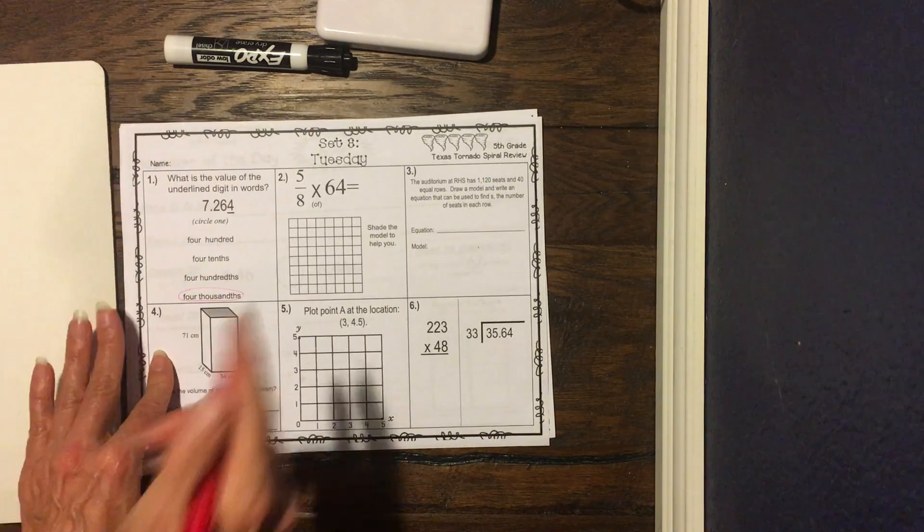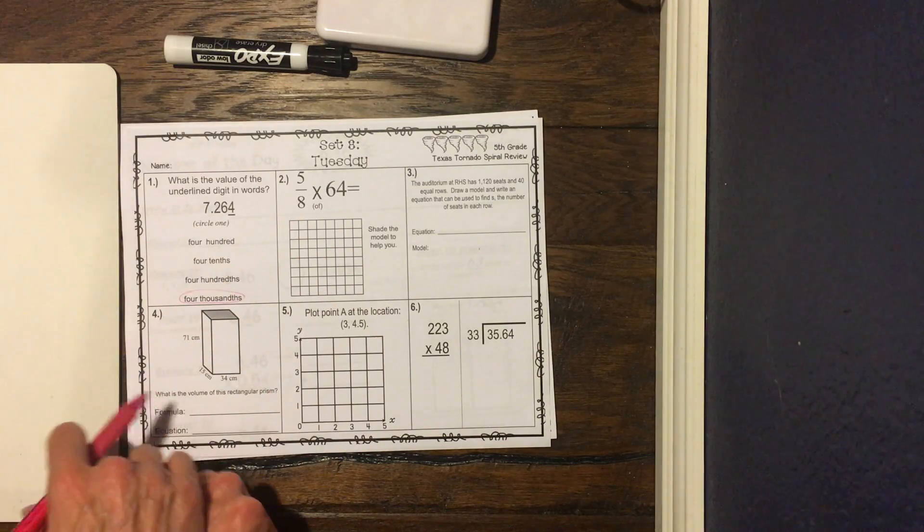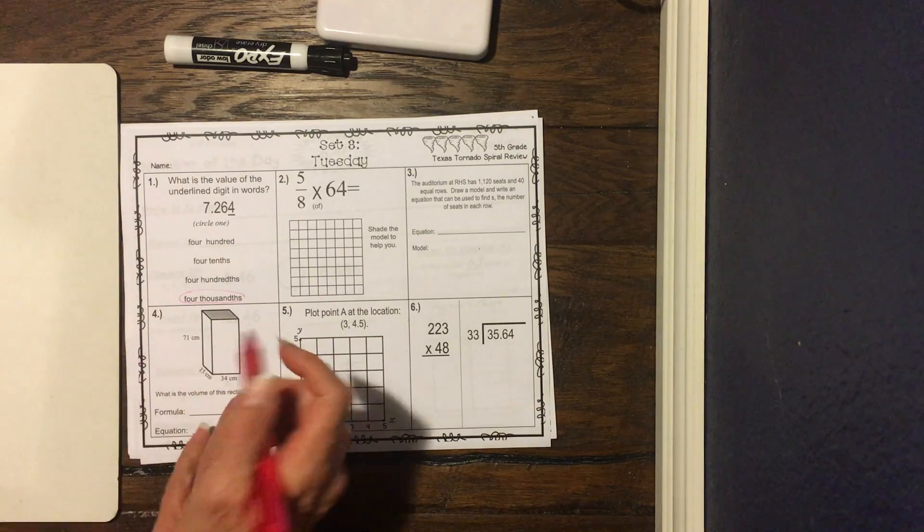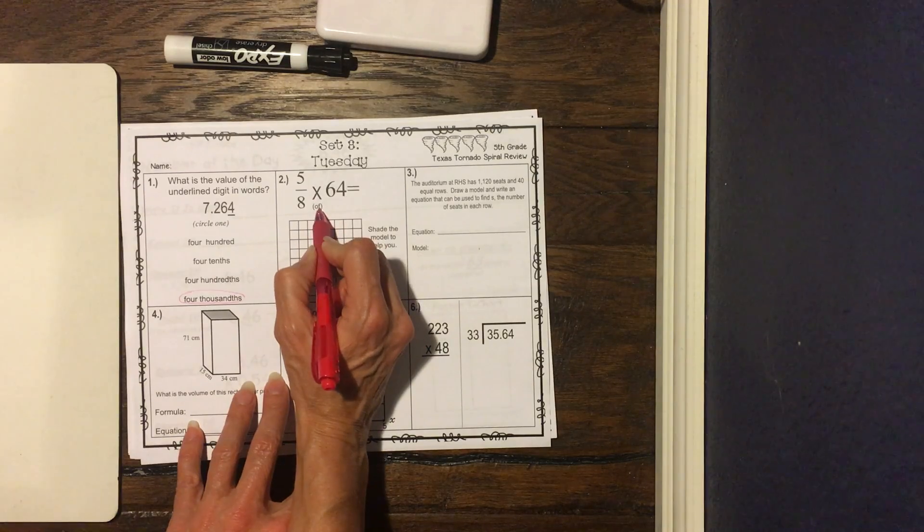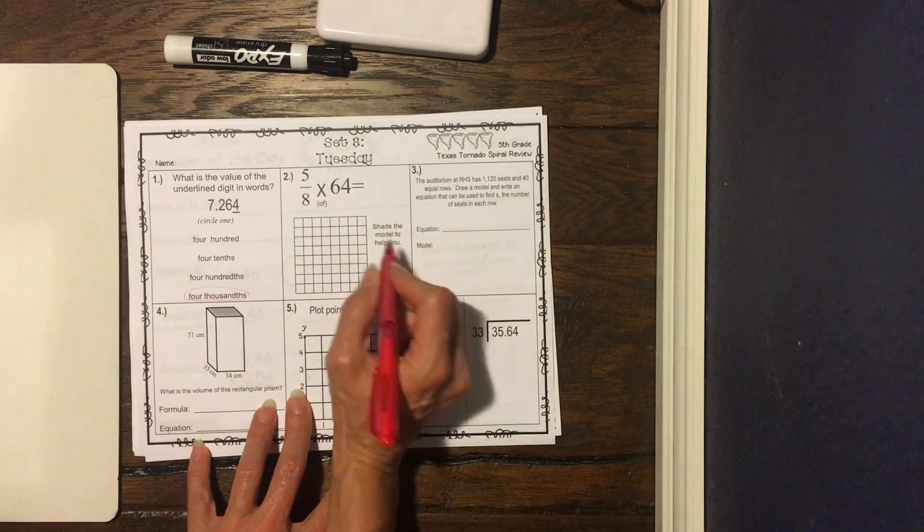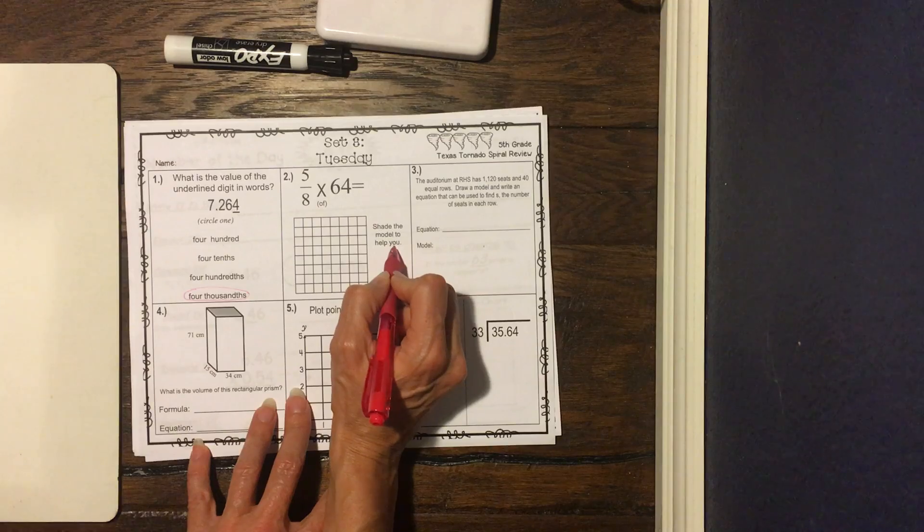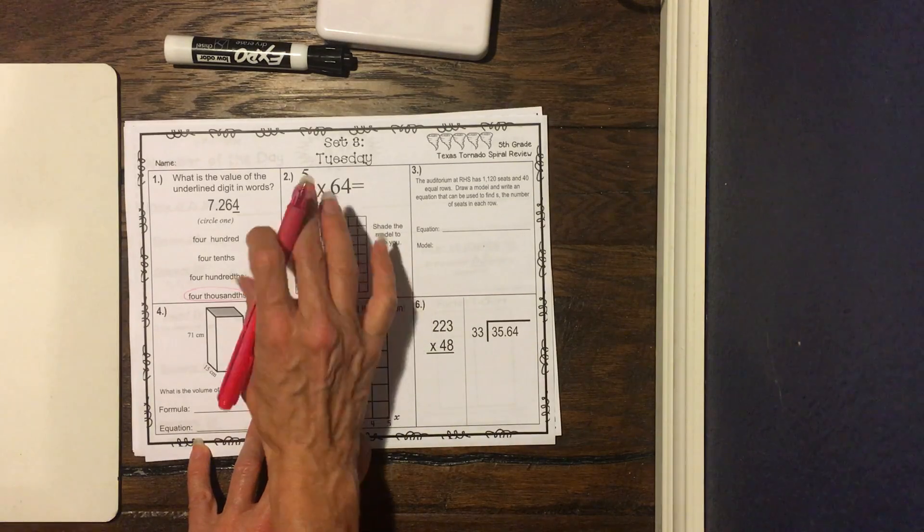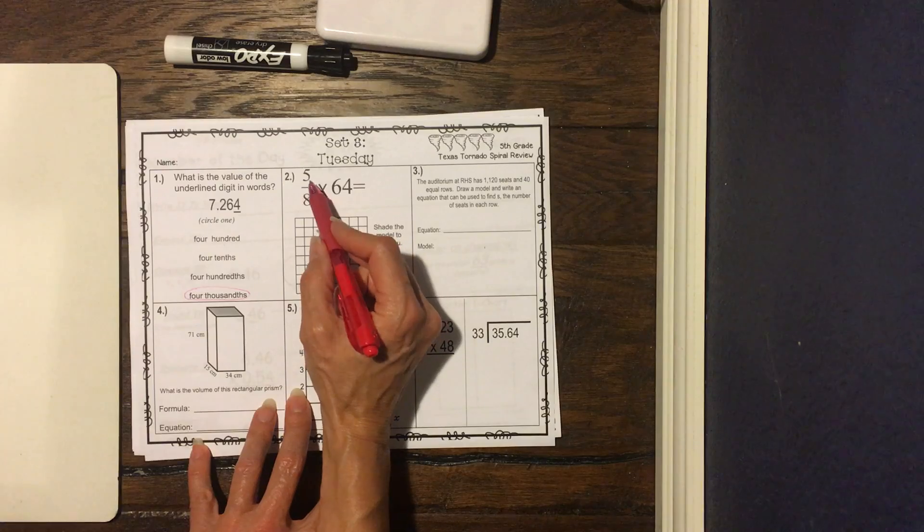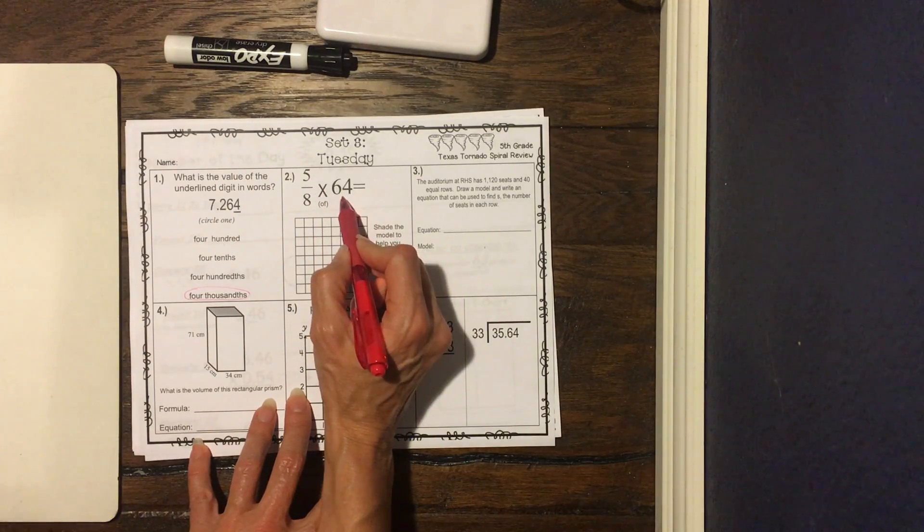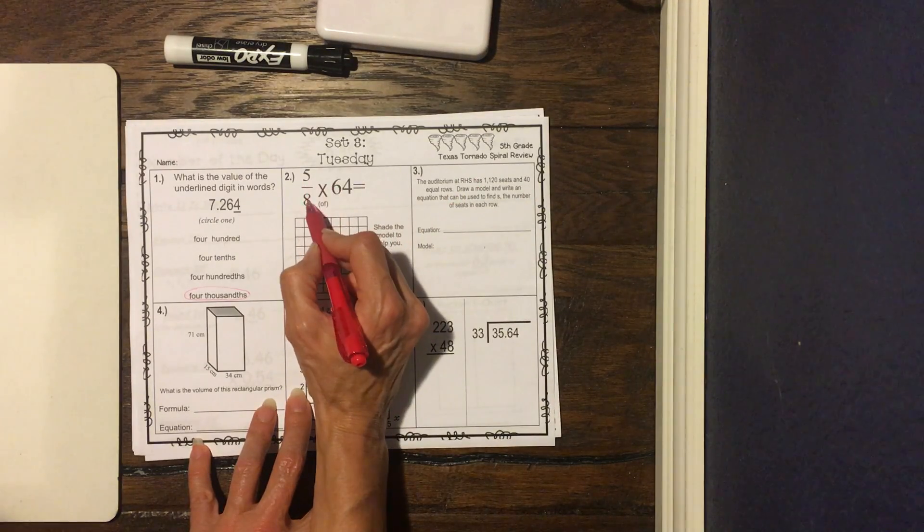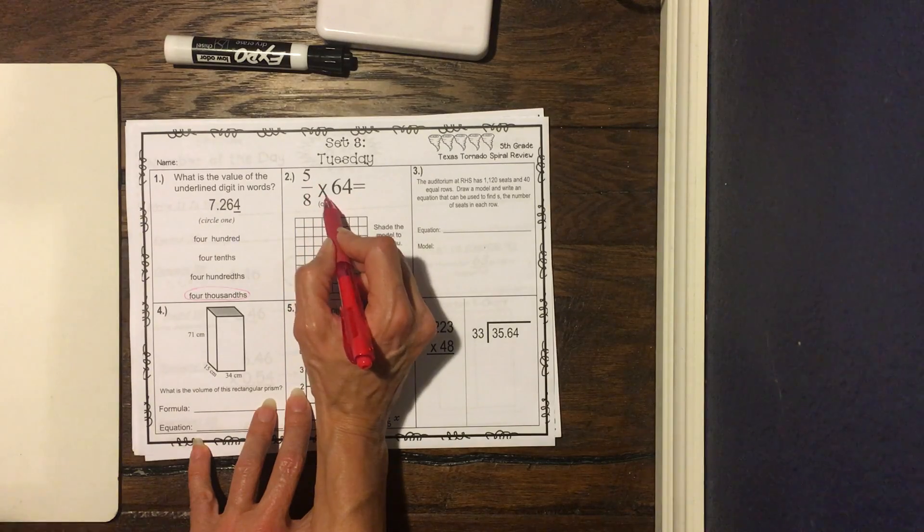All right, we're looking at this. This is five eighths times 64. We know that times means of. We've talked about that a lot in class. It's saying shade the model to help you. So let's shade the model first, and then we'll actually do the math. So we have five eighths times 64, or what is five eighths of 64?